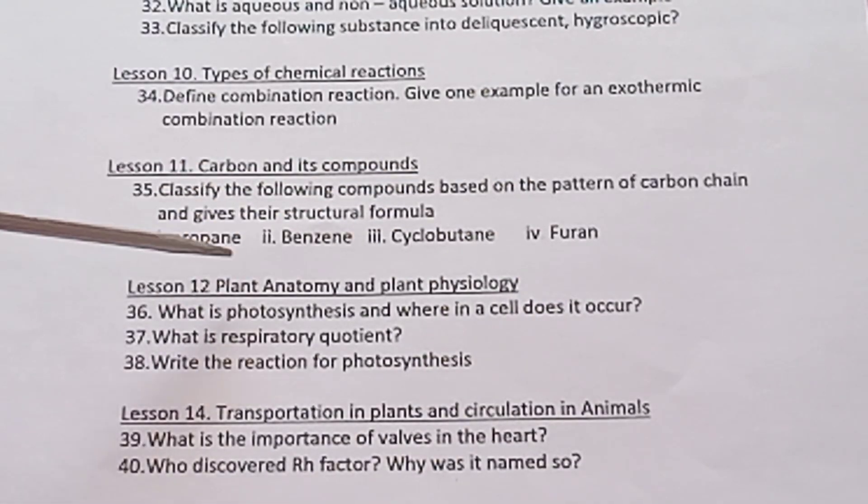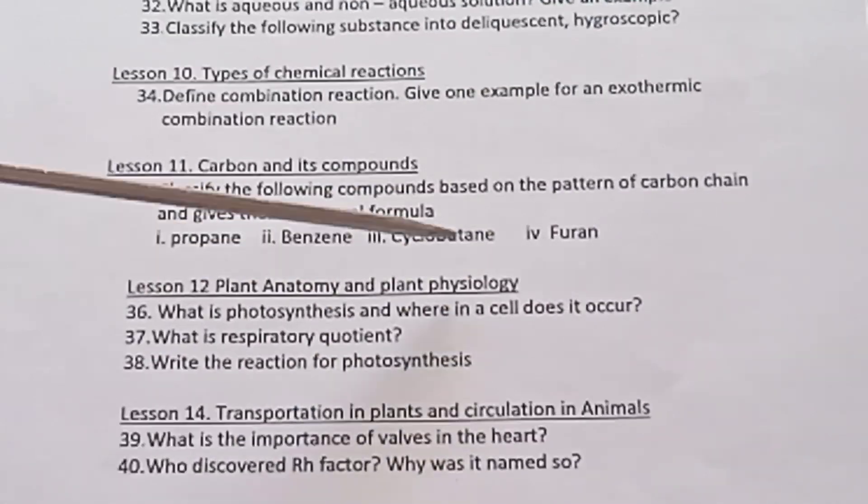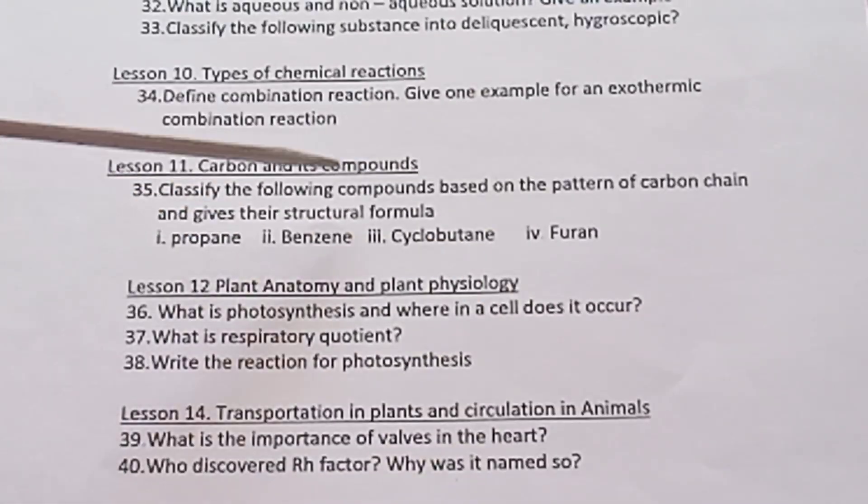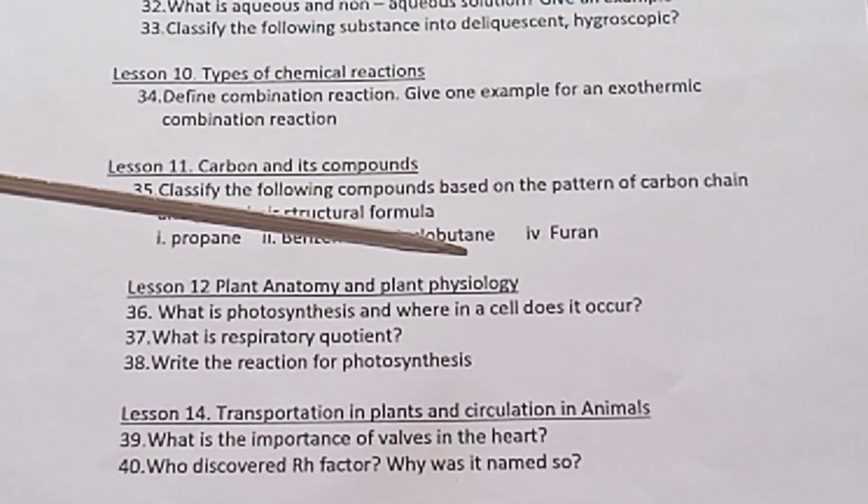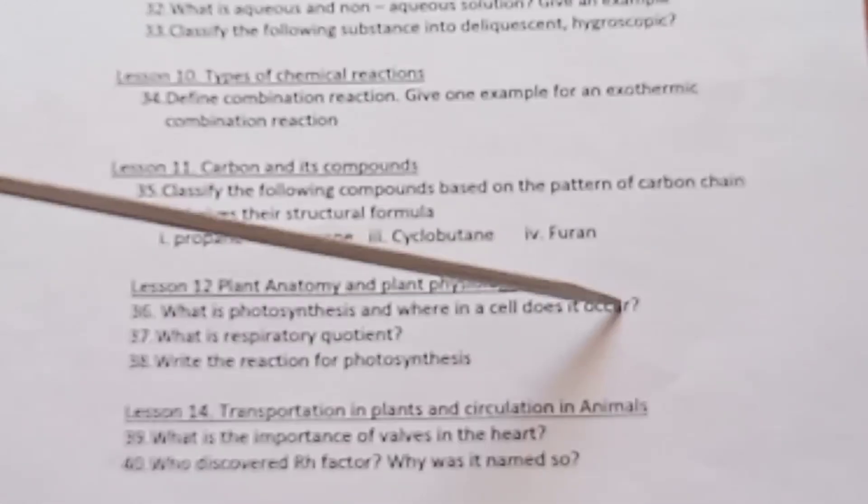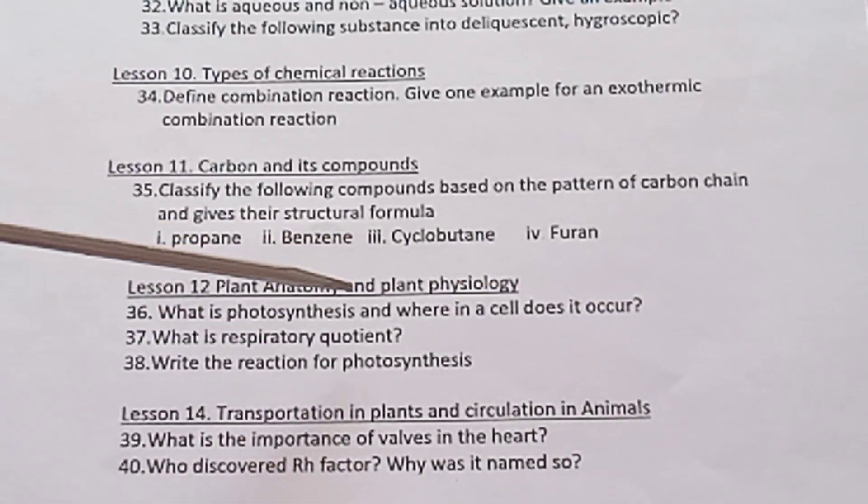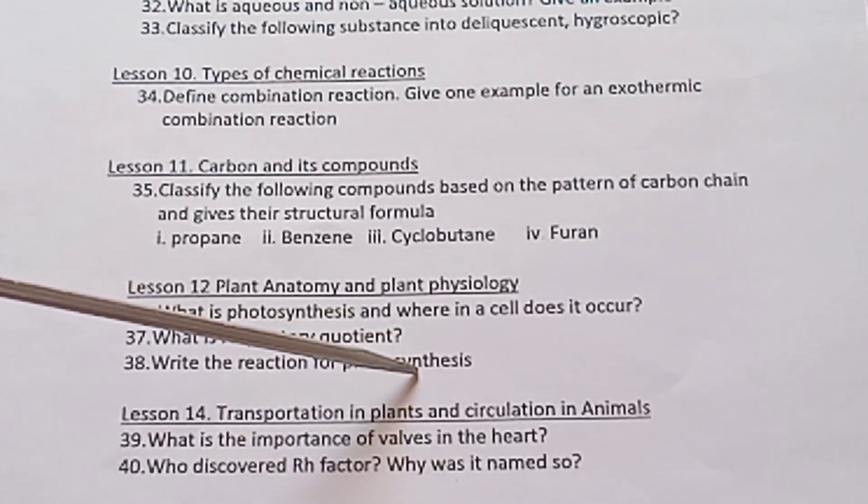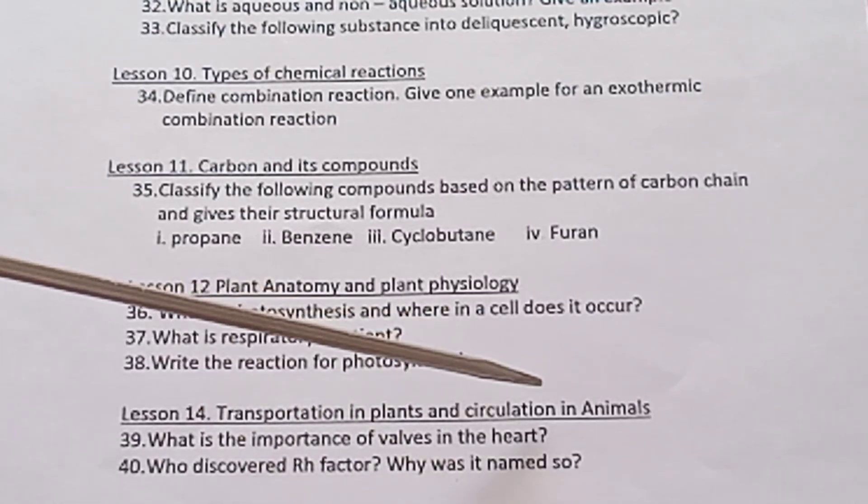Lesson 12 Plant Anatomy and Plant Physiology. What is photosynthesis and where in a cell does it occur? What is respiratory quotient RQ? Write the reaction for photosynthesis. You have to write down the equation.